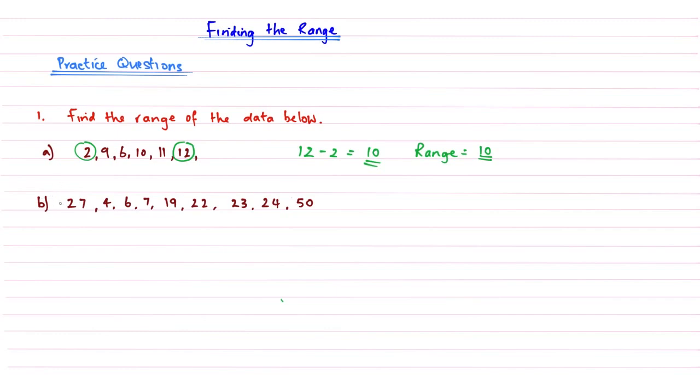Now if we move on to question b, scanning through we're trying to find the highest. My highest value in this case is 50, so I'll write that down. Then from that we're going to subtract the smallest, which I do believe is 4. So 50 subtract 4 gives me an answer of 46, so my range of the second set of data is going to be 46.